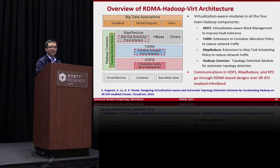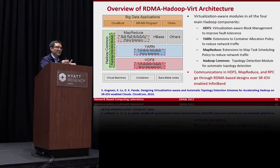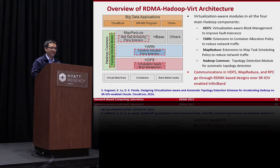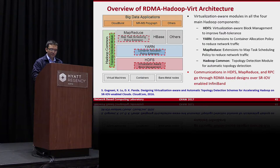For HDFS, we proposed virtualization-aware block management: if two VMs are co-located on the same host and blocks are placed on both, all data is lost if the host fails. We ensure blocks are placed across different physical hosts. For YARN, we ensure container scheduling is aware of VM locations. For MapReduce, tasks are scheduled with VM awareness. For Hadoop Common, we automatically detect underlying topology and expose it so that locality-aware communication and I/O can be achieved.